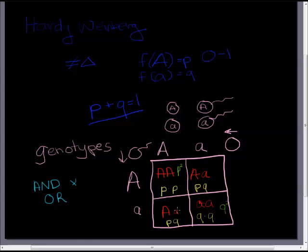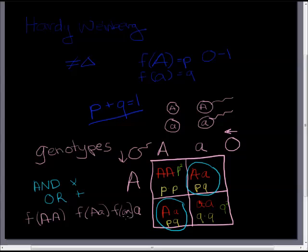Remember in statistics, when two things both have to happen to get a result, that's an AND statement — we multiply. To get big A big A, we need a big A sperm AND a big A egg, so we multiply. For an OR statement — to get big A little a, we can have a big A egg and little a sperm OR a big A sperm and little a egg — we add. So our genotype frequencies are: frequency of AA equals P squared, frequency of big A little a equals 2PQ (PQ plus PQ), and frequency of little a little a equals Q squared. Since these are all possible genotypes, they must sum to 1.